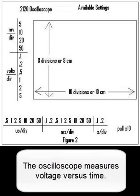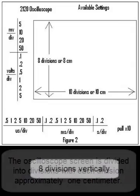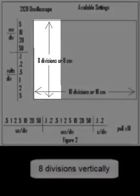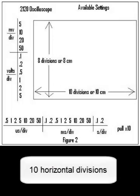The oscilloscope measures voltage versus time. The oscilloscope screen is divided into divisions with each division approximately one centimeter. 8 divisions vertically, 10 divisions horizontally.